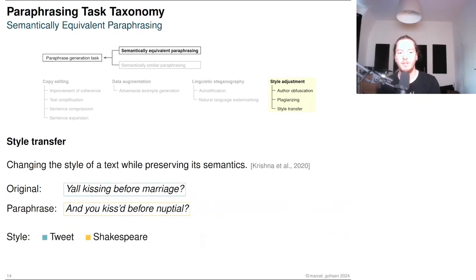Similarly, the goal of style transfer is to adjust the style of a text. In this particular case, the style of an original text should be replaced to fit a specific target style. In this example, a text taken from a tweet is modified to resemble a text written by Shakespeare.